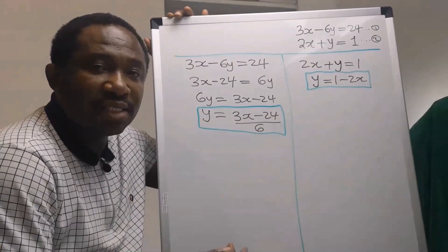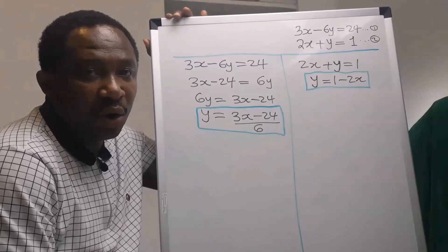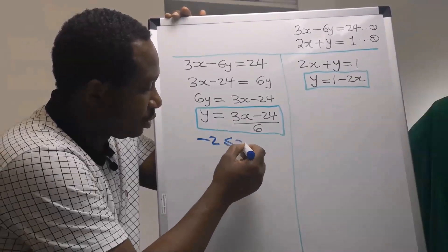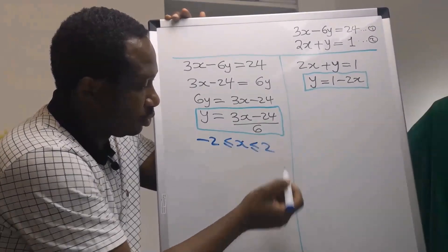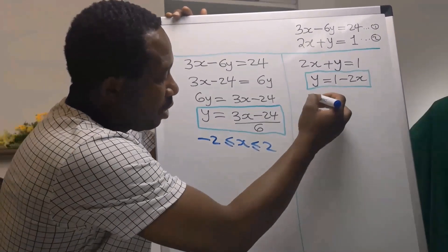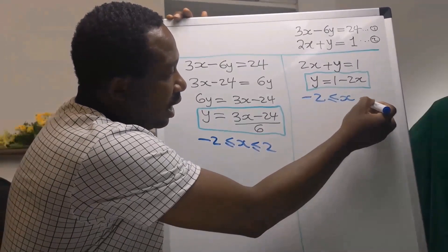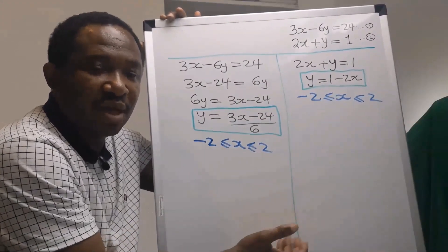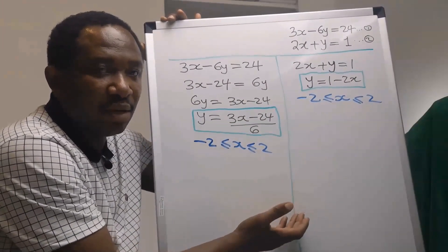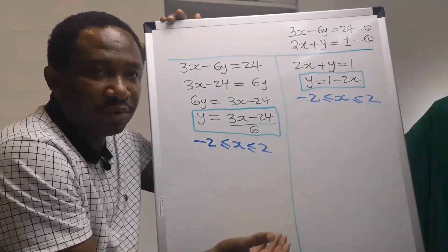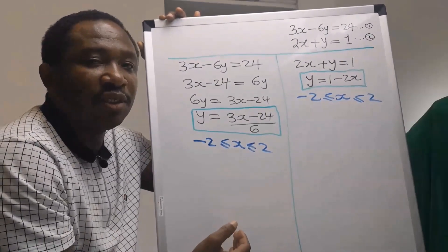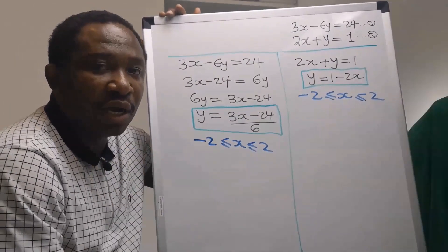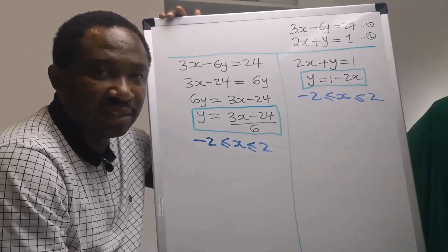The next step is to choose a range of integers. Let me choose between minus 2 and 2 for both equations. You can also choose between minus 5 and 5, minus 3 and 3, or even from 0. However, at the end of the day, we are going to extrapolate the line to cover other ranges of integers.